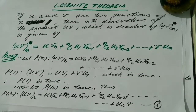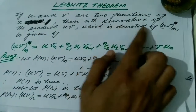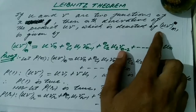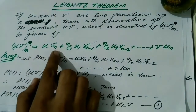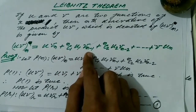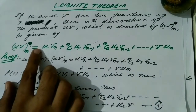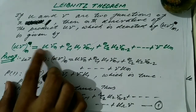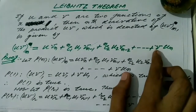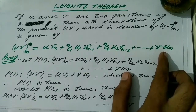Today we are going to discuss a very important theorem called Leibniz theorem. This theorem is used to find the nth derivative of the product of two functions of a single variable x. If u and v are two functions of x, then the nth derivative of the product uv, denoted by (uv)_n, is given by: (uv)_n = u·v_n + nC1·u1·v_{n-1} + nC2·u2·v_{n-2} + ... + u_n·v. This is Leibniz theorem.